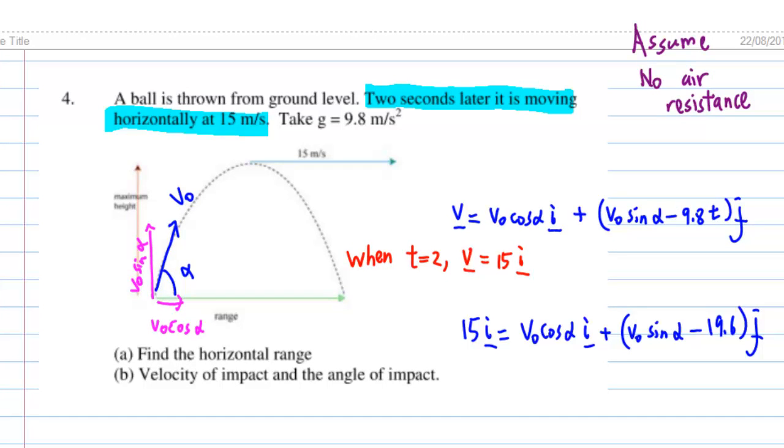Putting t equal to 2 into both sides of this equation, we get left hand side 15 i, right hand side V0 cosine alpha i plus V0 sine alpha minus 19.6 j.